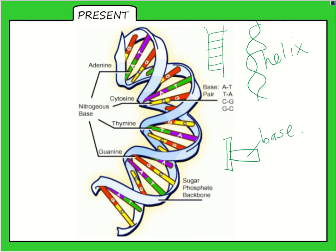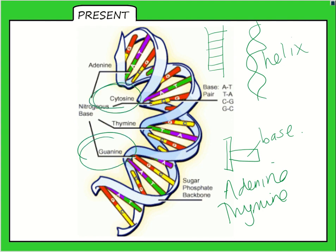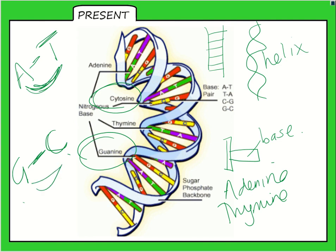There are four types of bases: adenine, thymine, guanine, and cytosine. Adenine always pairs with thymine — A and T are always together. Guanine always pairs with cytosine — C and G are always together. That's called complementary base pairing: those two bases complement each other and always go together.